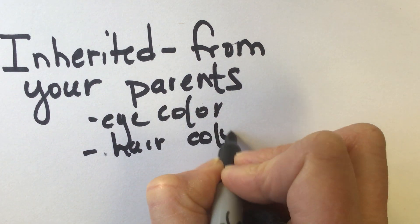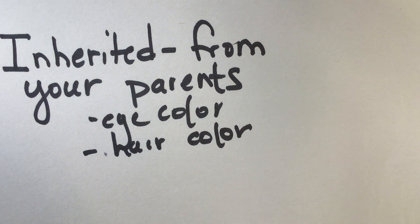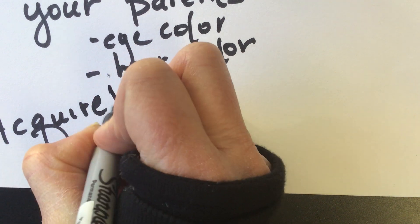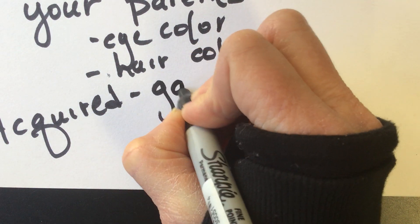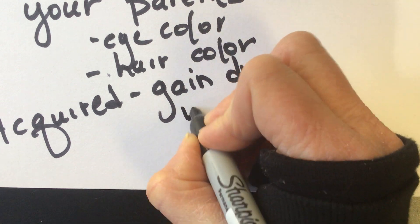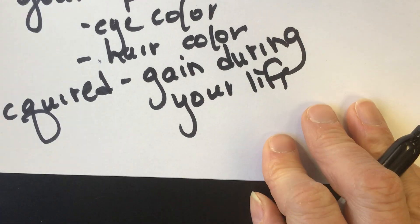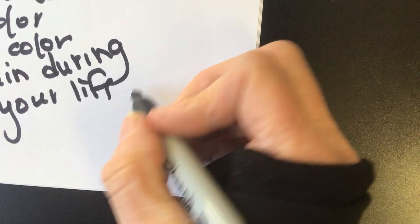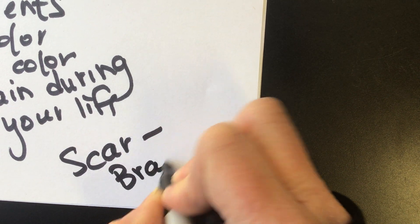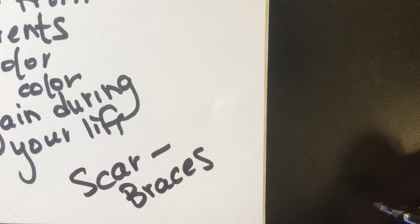An acquired trait is something that you gain during your life. So the best example there is like a scar. So the acquired trait would be like a scar. Or when you have braces, you're changing the shape of your teeth. That's an acquired trait. That's going to stay with you for your lifetime.